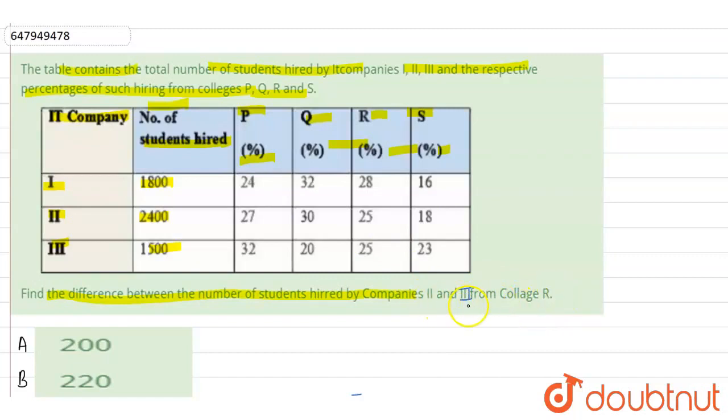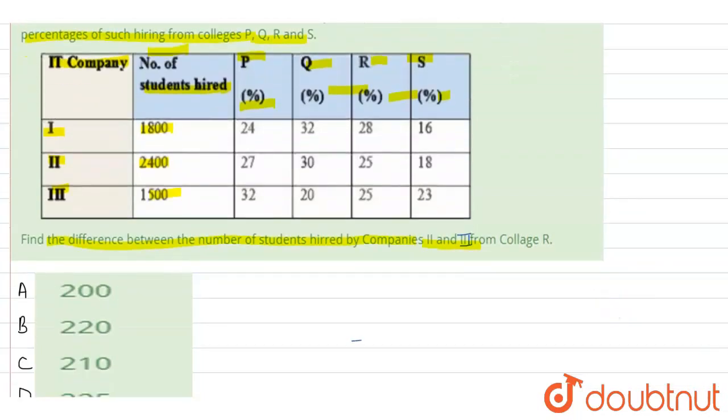We are asking about the details of college R. It is companies 2 and 3. We are asking about these two companies.